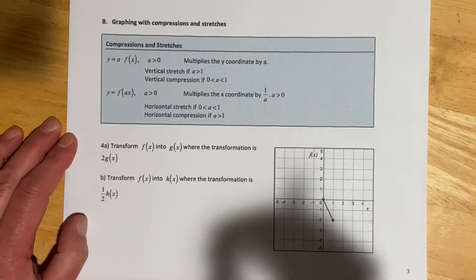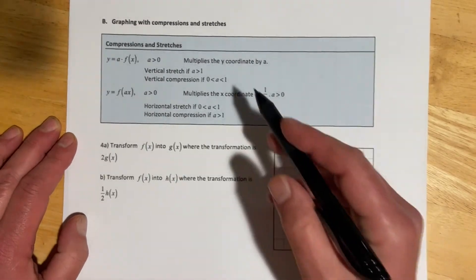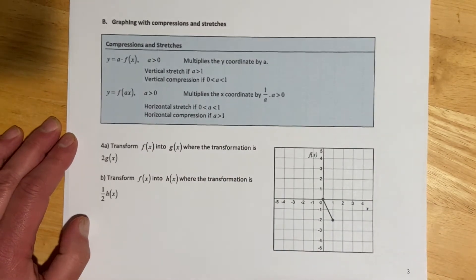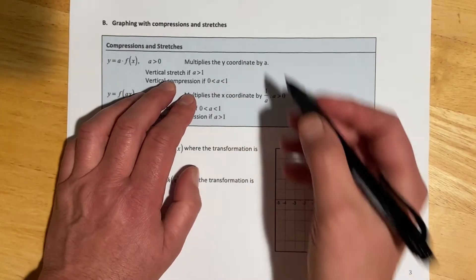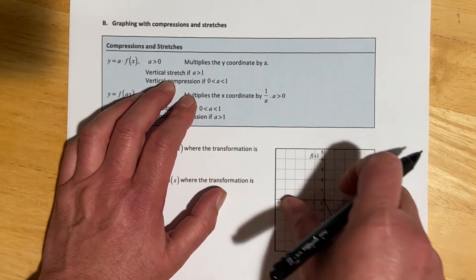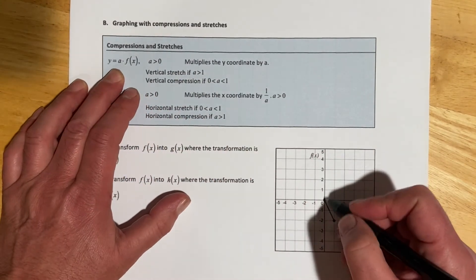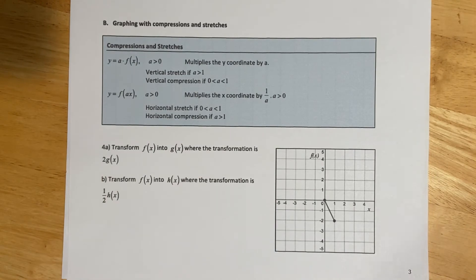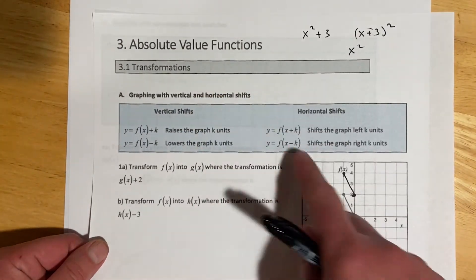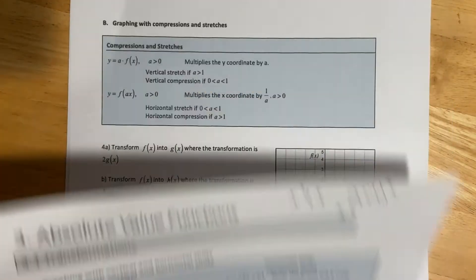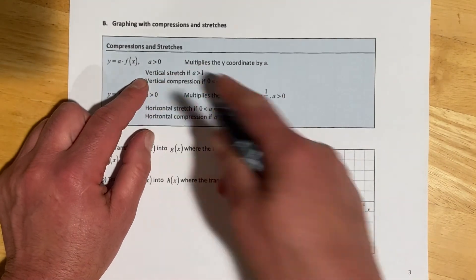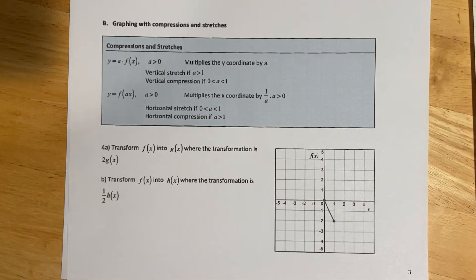This next transformation is definitely the hardest of the things we'll look at: graphs with compressions and stretches. We have two kinds — they come in pairs basically. We can compress and stretch vertically, and we can compress and stretch horizontally. If we're messing around on the outside, that's going to be a vertical stretch or compression — same way that adding or subtracting on the outside raised the graph up and down. When we mess around on the inside, that's going to be a horizontal stretch or compression, messing with the x values.